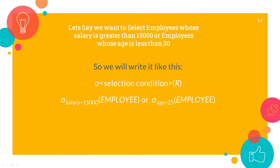Now let's look at another example. Let's say we want to select the employees whose salary is greater than 15,000 or employees whose age is less than 30. How do we write this representation? We denote it like this — this is the select operator, this is the selection condition, and this is the table R. So we write: select operator, first condition salary greater than 15,000 on table employee, OR the select operator with condition age less than 25 on table employee.